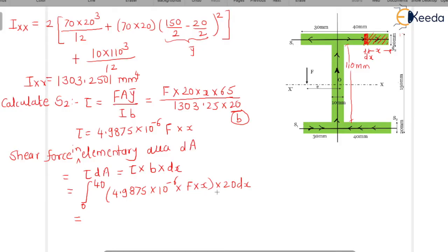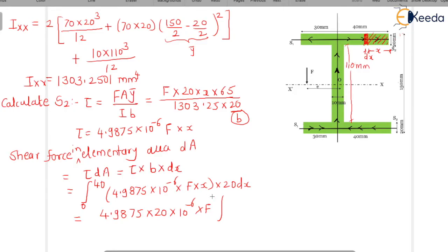Evaluating: 4.9875 × 20 × 10⁻⁶ × F × [x²/2] from 0 to 40. Substituting the limits, we get S2 = 7.98 × 10⁻² F. So we have found the shear force S2.